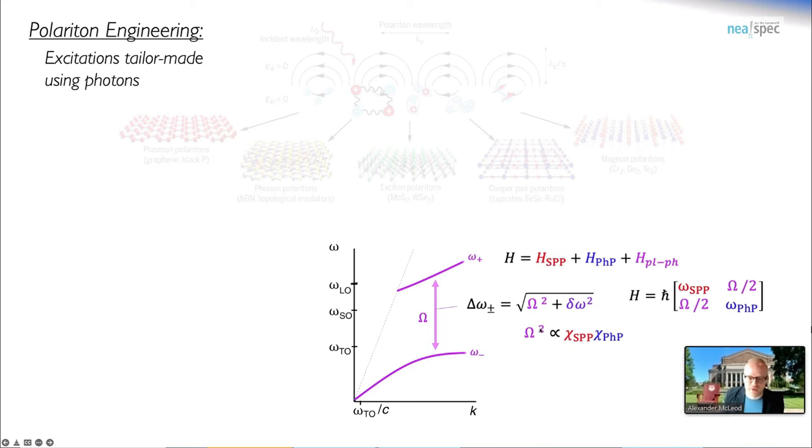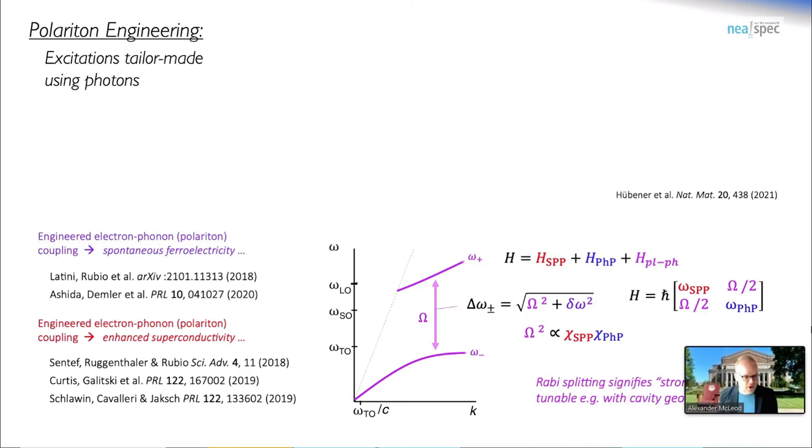The strength of this mode splitting is something that we can quantify by doing nanoimaging or nanospectroscopy. This mode splitting is often called the Rabi frequency. The question to ask is, what's the relevance of this Rabi frequency? It has been highlighted as a potential origin for triggering new phases of matter if one can only achieve extremely strong coupling between collective modes, for example, a plasmon and a phonon, and has been implicated in engineering enhanced superconductivity or spontaneous ferroelectricity. The context of this strong coupling between polariton modes is a storied one and a very important one in the condensed matter community.